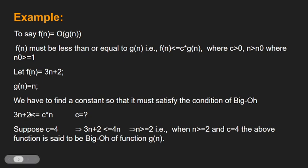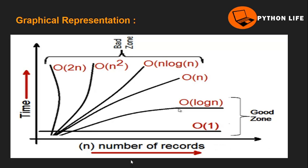Looking at the graphical representation: as the number of records increases, time also increases. The good complexity classes on the graph are O(1), then O(log n), then O(n log n). I will explain the worst case complexity classes in the next classes.